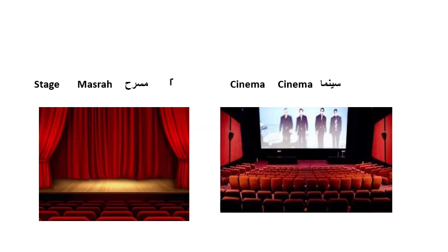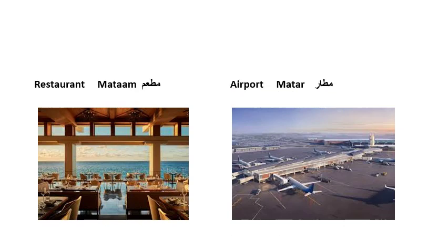The stage means 'مسرح' and we say 'هذا المسرح' because 'مسرح' is masculine. Here is cinema — cinema is the same word in Arabic. You say 'هذه السينما' because 'سينما' is feminine. So these are two examples of places in our country.